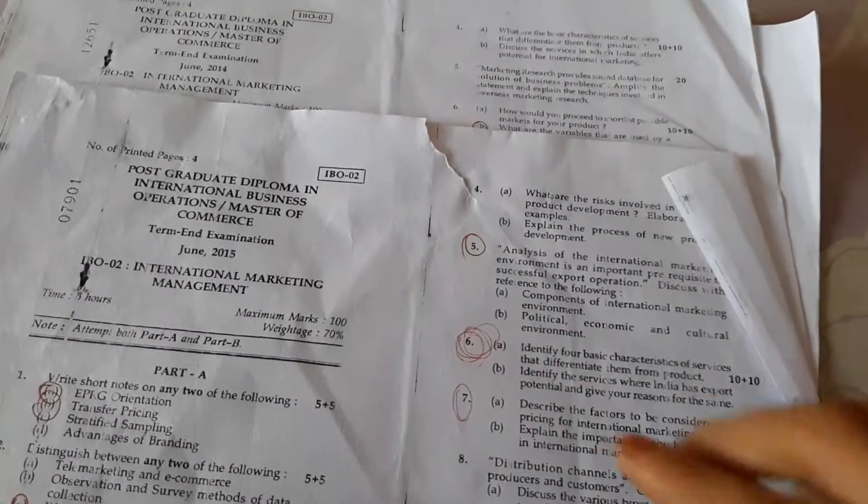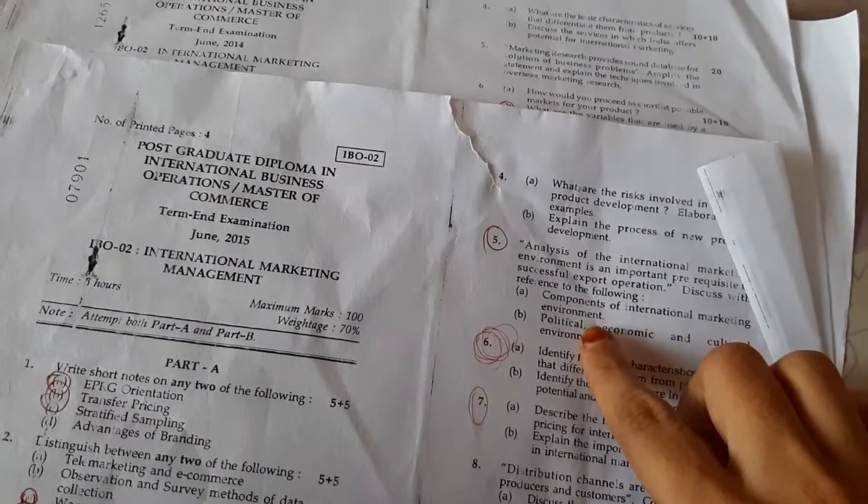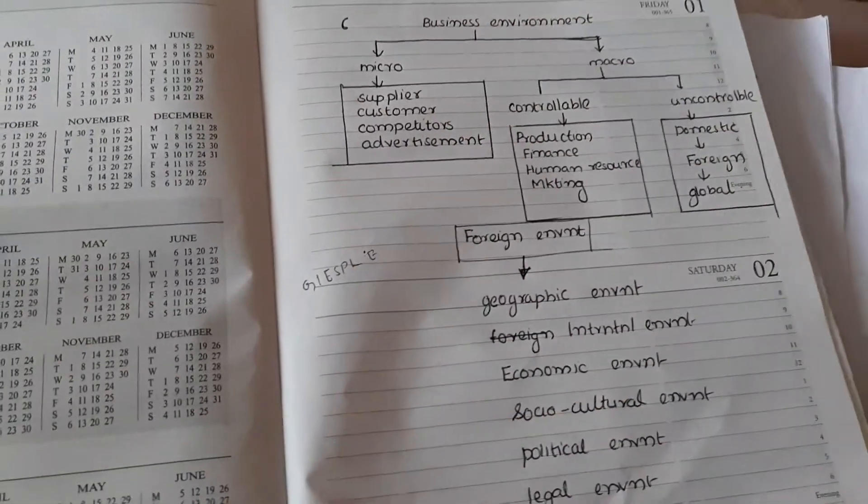Here you can see, in 2015 this question was asked. Look at the fifth question: competence of the international business environment - political, economic and cultural. See here, competence of political, economic and cultural we have already discussed - socio-cultural.